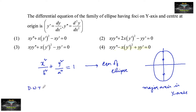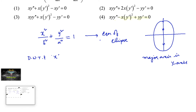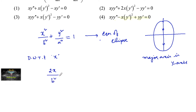Now differentiate with respect to x. We get 2x/b² + (2y/a²) · dy/dx = 0.